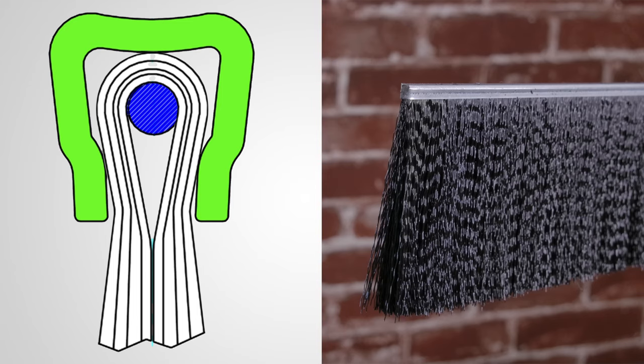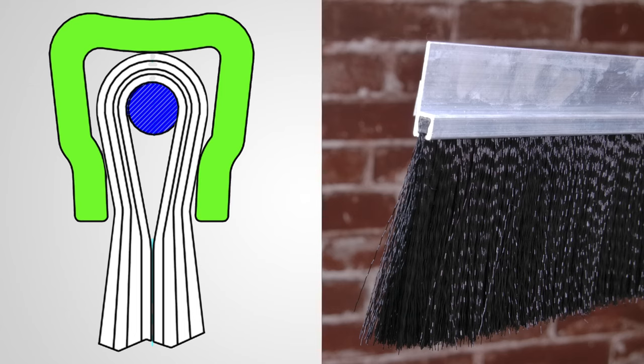The crimp channel allows the brush to easily slide into a retainer for quick and easy mounting to a garage door frame.